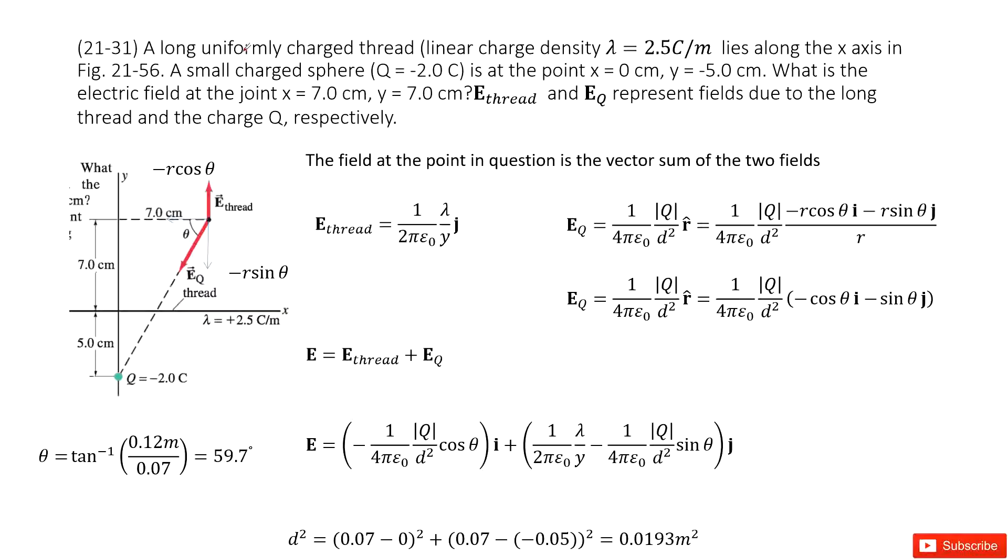Chapter 21 is about electric charge and electric field. You can see we have a long uniform charged thread located at the x-axis with charge density lambda. We also have a small particle carrying negative 2 coulombs located on the y-axis.